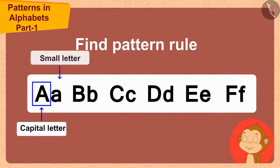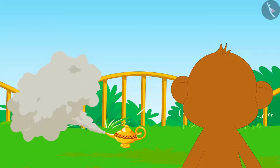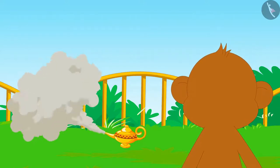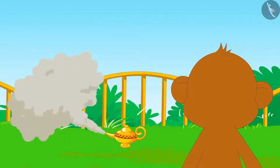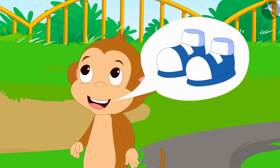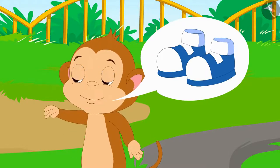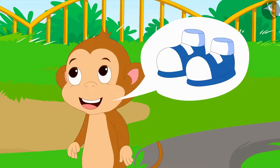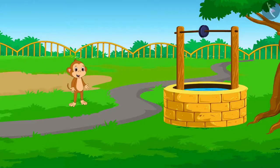Babban also discovered the rule of the pattern made from the alphabet. The genie said, "Like you, your answer is absolutely correct. What is your next wish?" Babban replied, "I need new shoes so that I can go for a walk every morning and stay healthy." Just then, new shoes appeared in front of Babban.